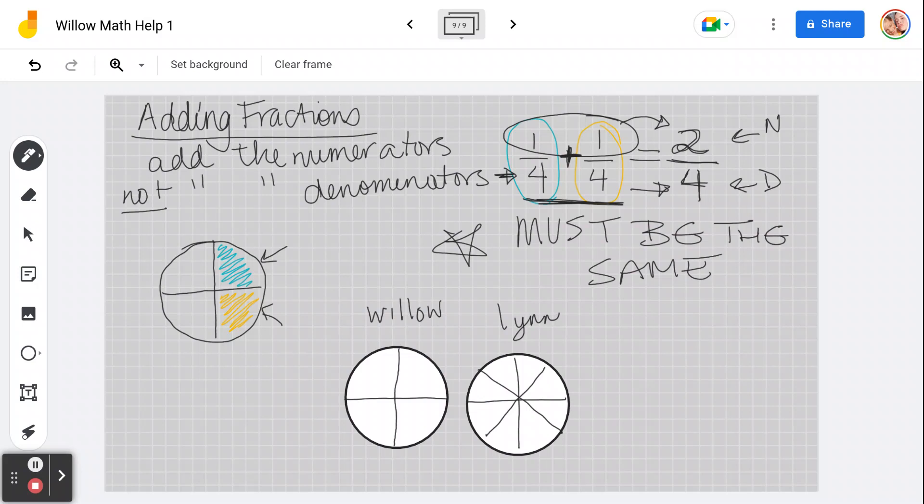Brian comes in and says, Hey Lynn, can I have a slice of your pizza? I say, okay, here you go. So he has one slice of my pizza. Then he goes to Willow and says, Hey Willow, can I have one slice of your pizza? And Willow says, okay, Brian, but that's quite a lot. Now, how many slices do you have in total? Willow has four slices in total.